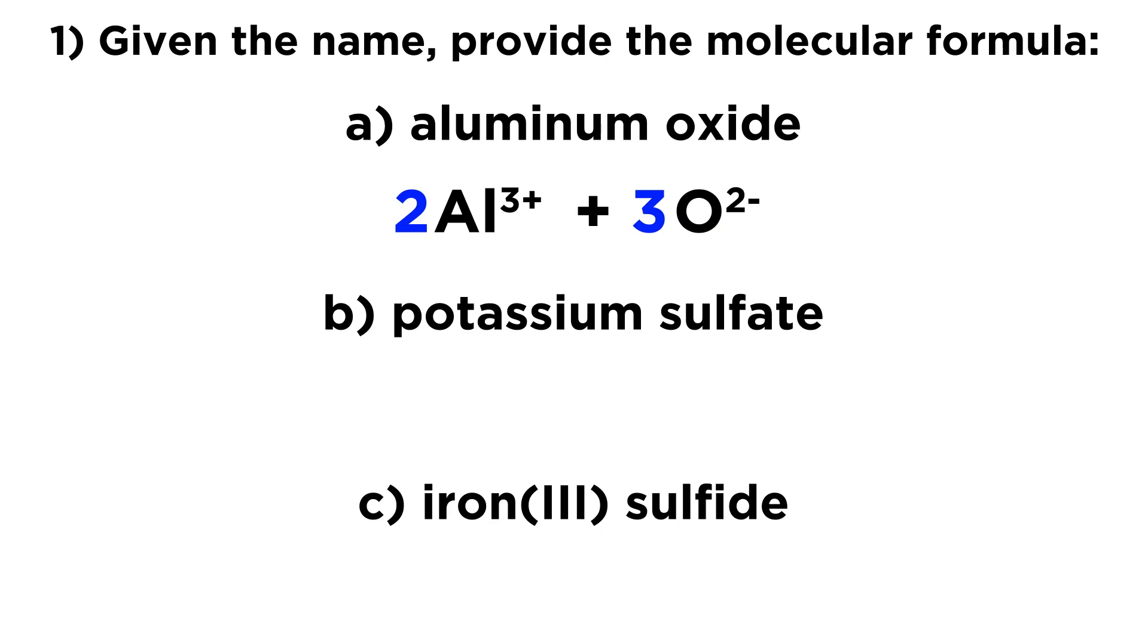Right? Two times three plus is six plus, and three times two minus is six minus. That is how we're going to balance the charges on these ions. So that is the ratio of these ions in this compound, and so we can just write that out as a molecular formula, Al2O3.